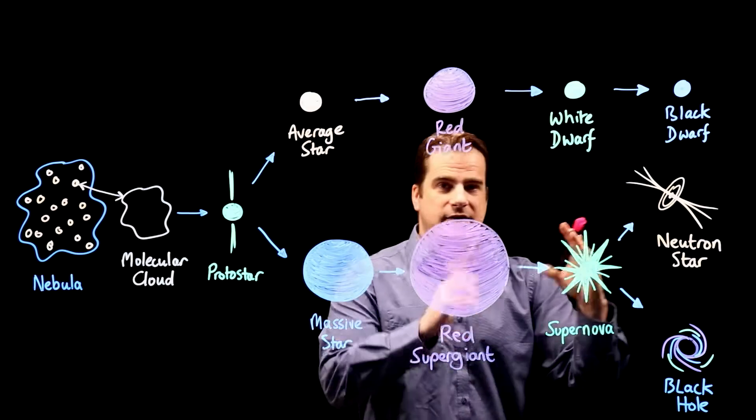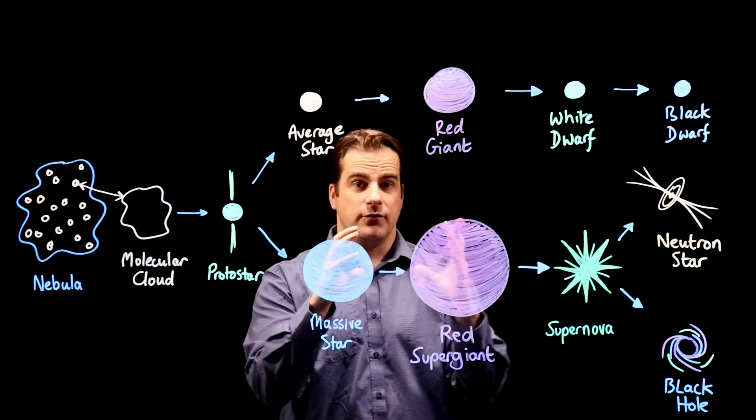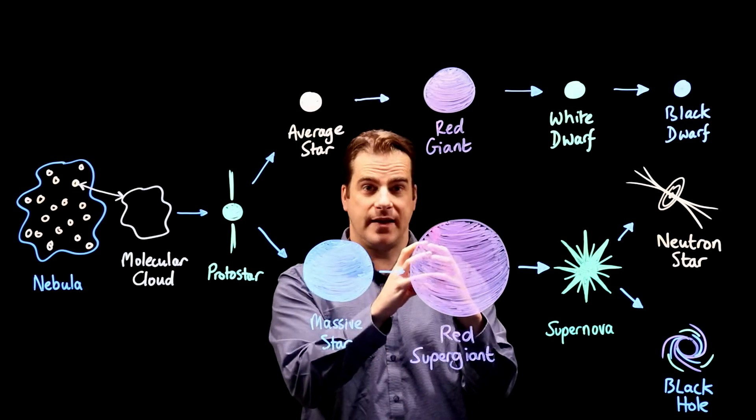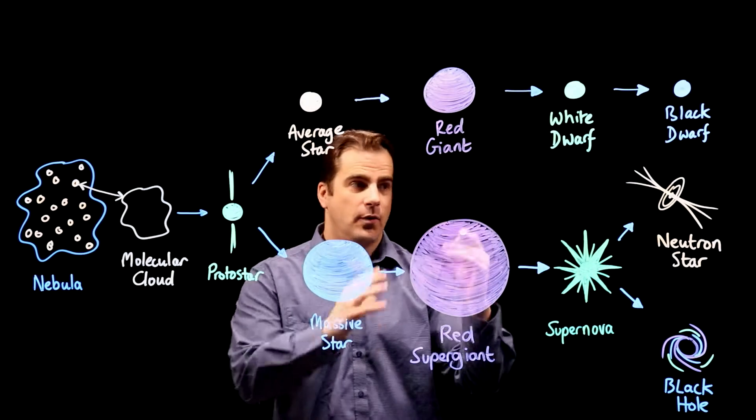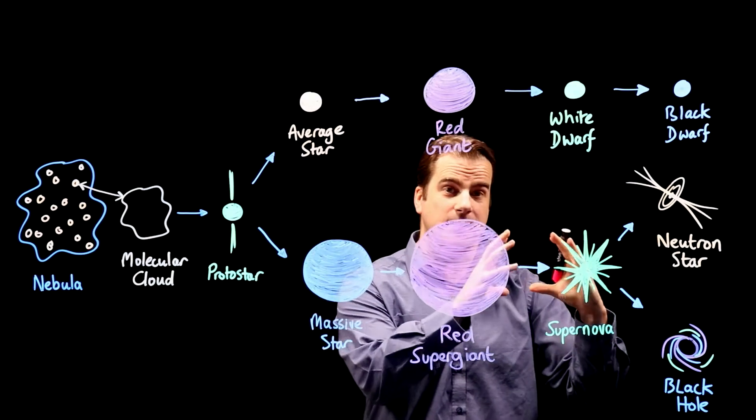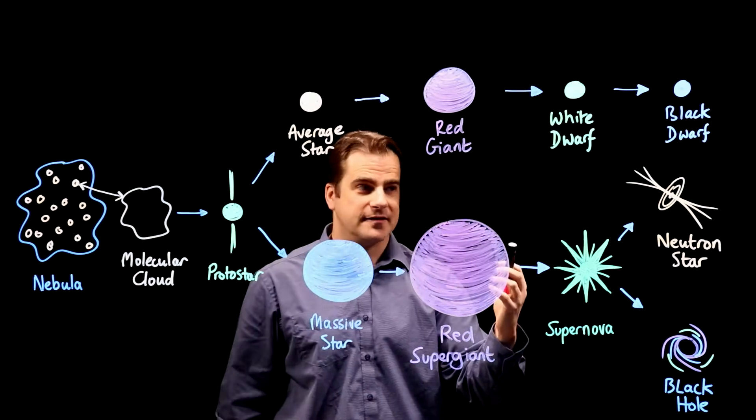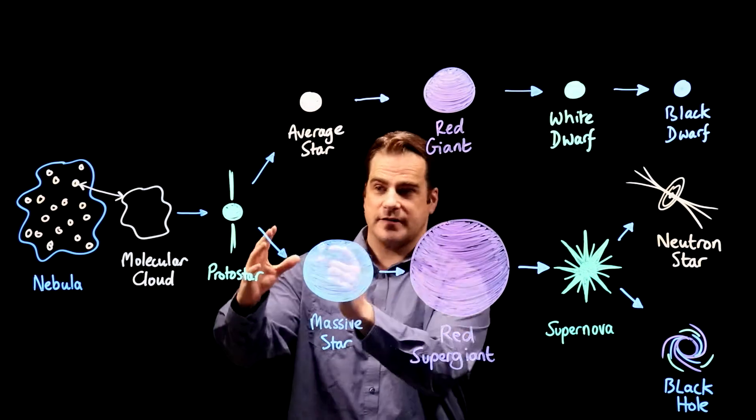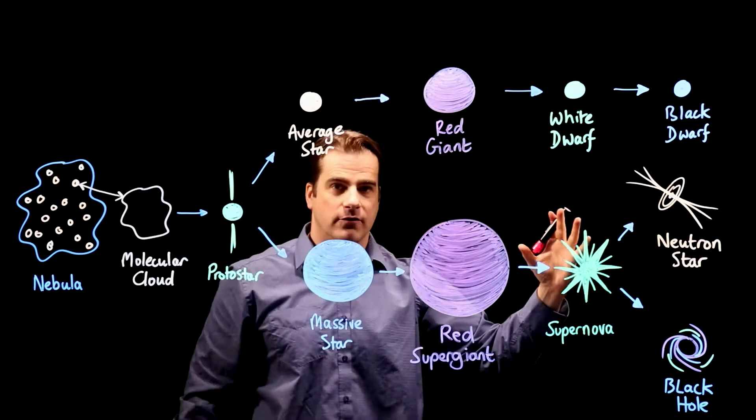A neutron star is made mostly of neutrons and it's incredibly dense. A typically sized neutron star will be about 20 kilometers across. And we're talking about something that has the mass at least, or started off, it does lose some mass in the supernova.